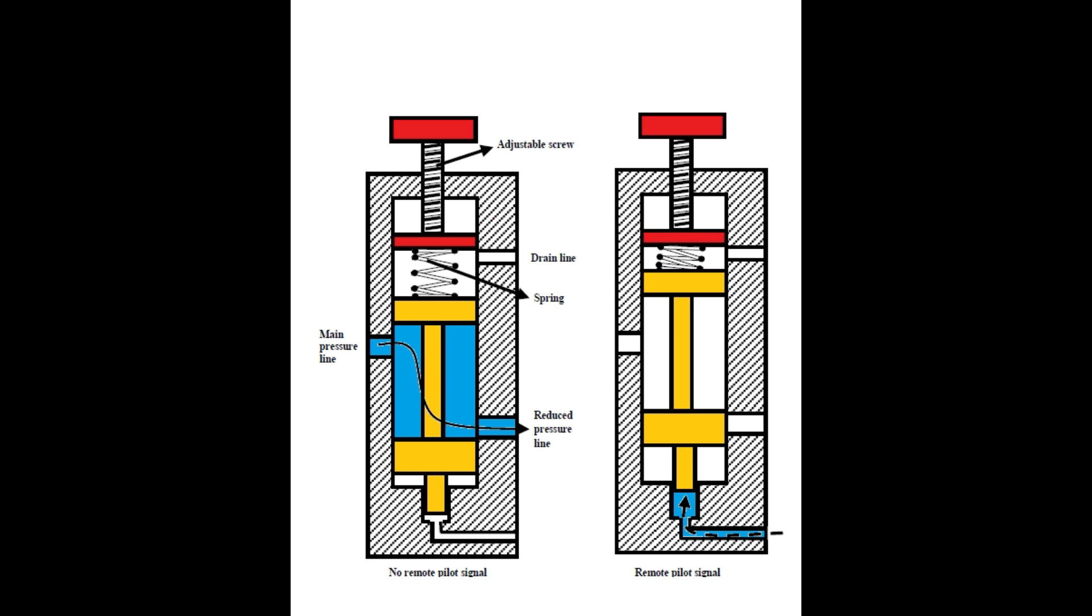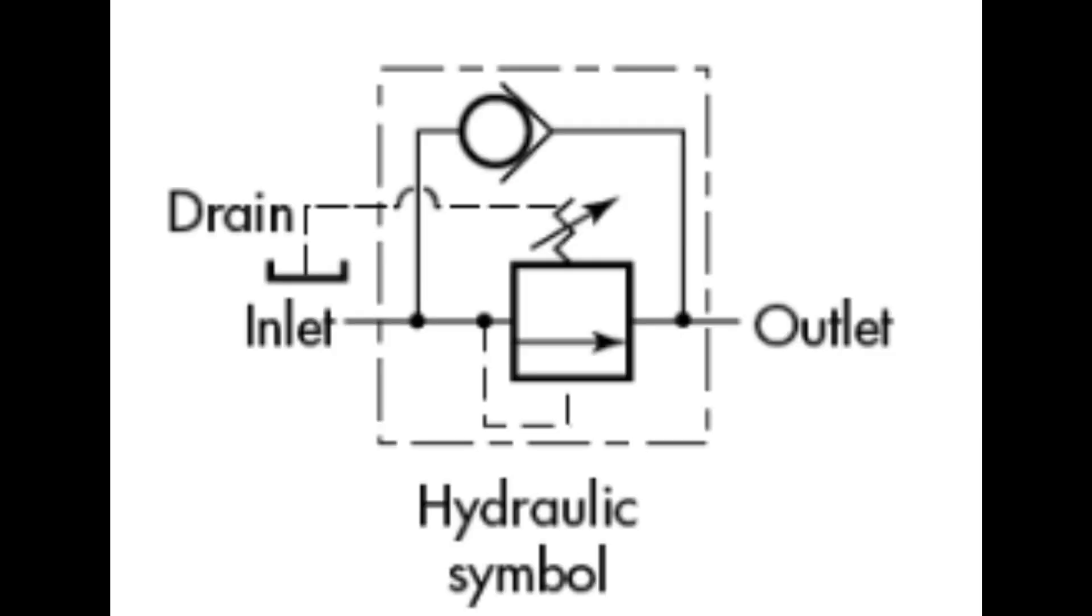The check valve allows the sequencing valve to be bypassed in the reverse direction. The component enclosed lines indicate that the check valve is an integral part of the component.